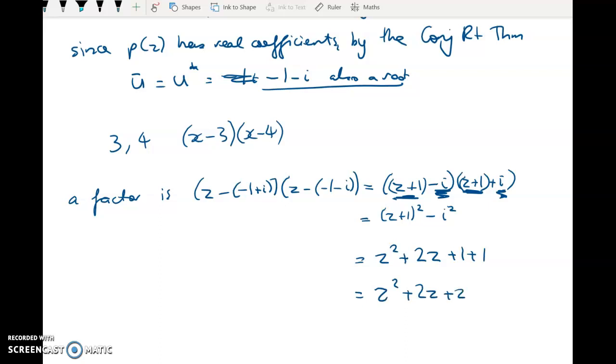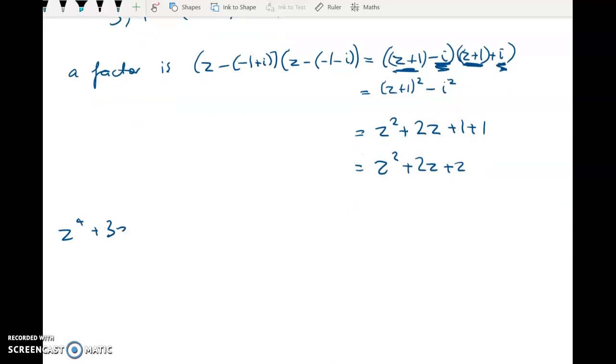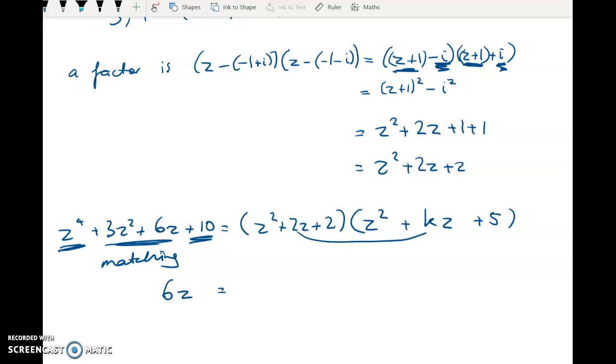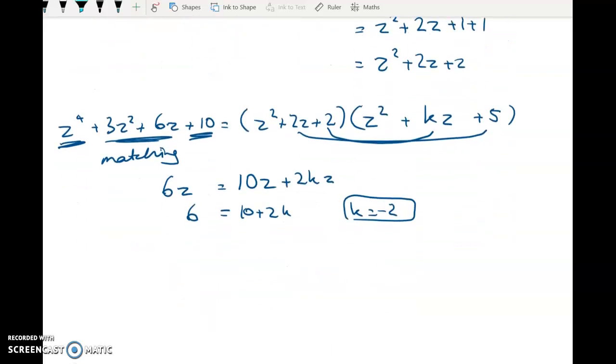So that's great because now what I can do is I can take my polynomial and I can factorize it into two quadratic bits. I'm going to have this which is from u and the conjugate of u and I'm going to have another bit. To make it match to z to the power of four it's got to be z squared here, to make it match up to 10 it's got to have a plus five here and then it's got to have some kind of z term in the middle. So matching, let's match on the six z. Six z is coming from two z times five gives me ten z and then here I've got plus two k z so six is equal to ten plus two k and k must equal negative two.